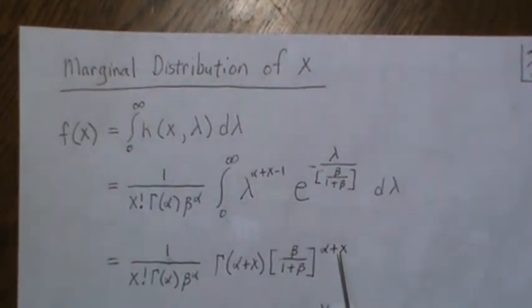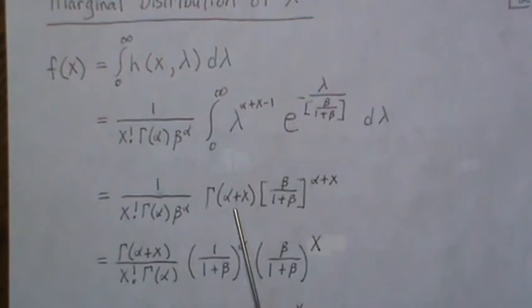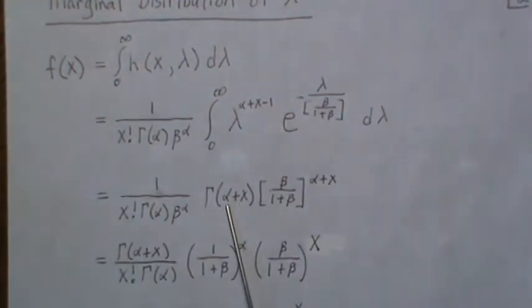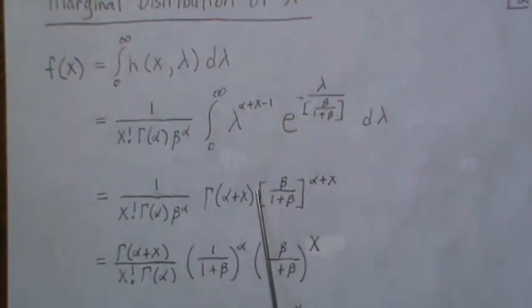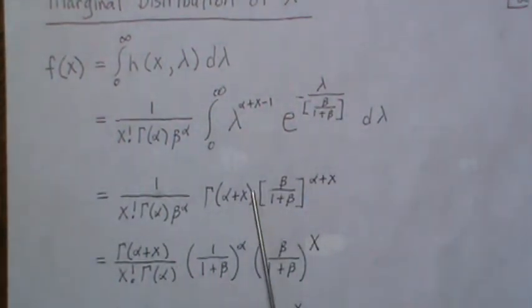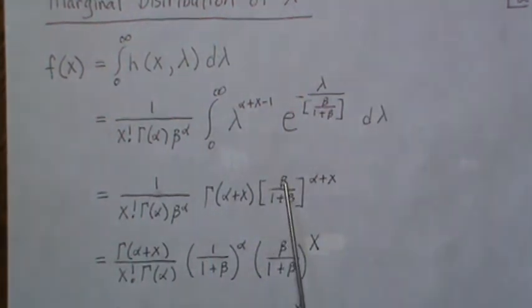Then what we do next is we put that here and these of course stay down. Now this alpha is combined with this alpha, so this product can be beta over 1 plus beta to the alpha times beta over 1 plus beta to the x. So the x part is right here. For the alpha part, we take it up, and then this one cancels with that beta and we're left with this.